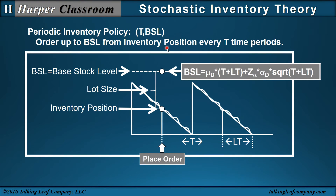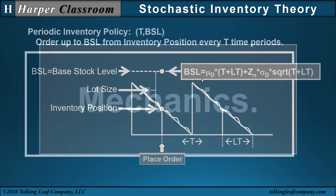That equation will be used to determine your base stock level. So the periodic inventory policy, which is tBSL, is order up to the base stock level from the inventory position every t time periods, and there's the equation for the base stock level.